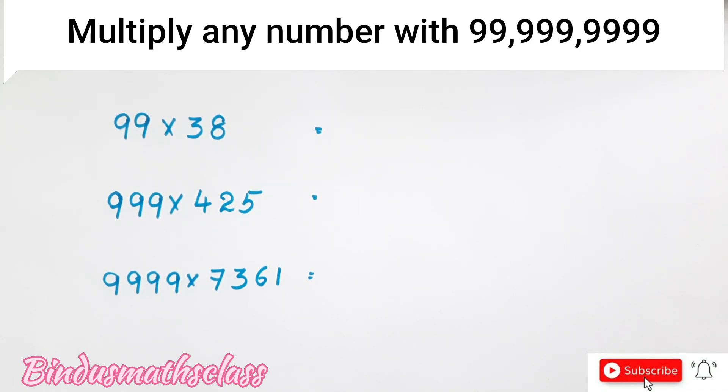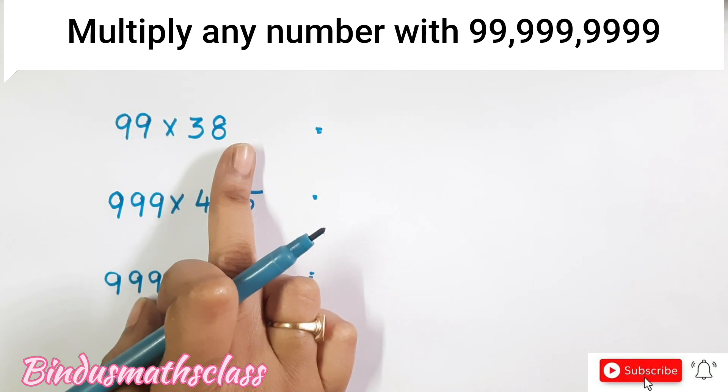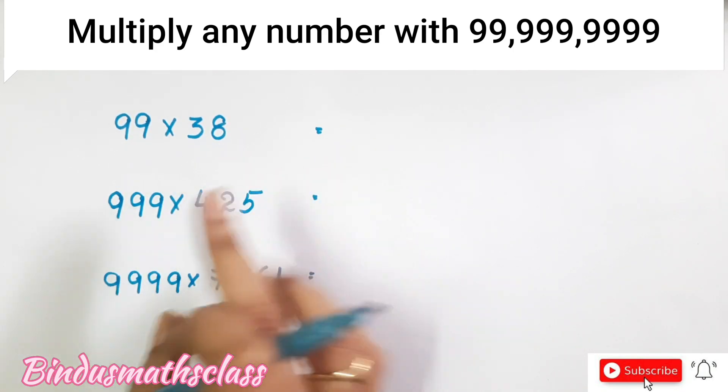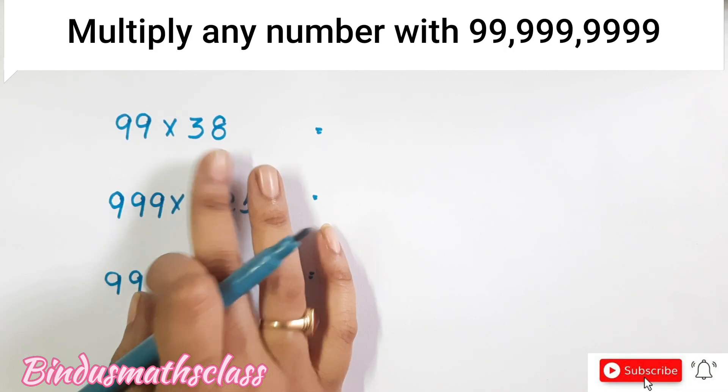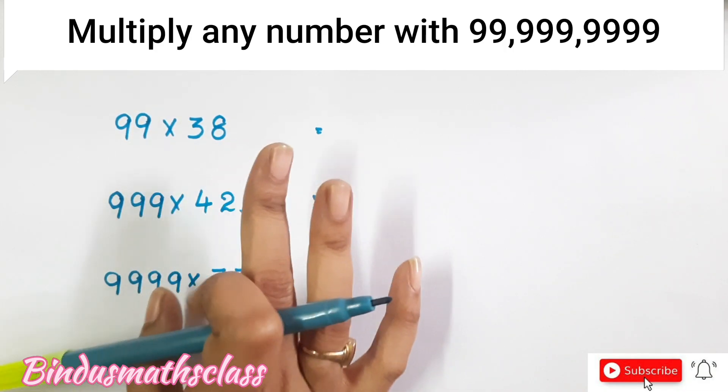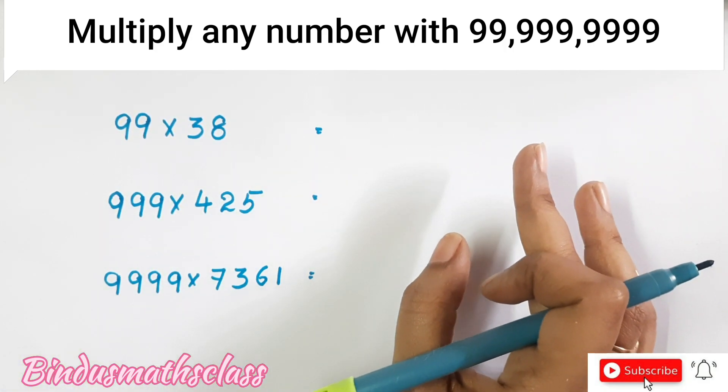So here we can write in a single step. How? So simple. Just check whether the given two numbers are equal digits or not. So 99, 38 are the equal number of digits. Means two digits and two digits. So that you have to write first,